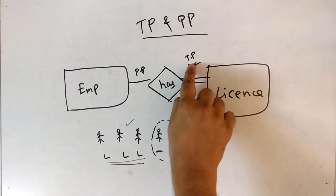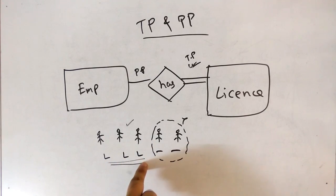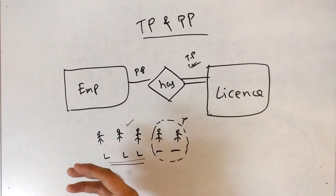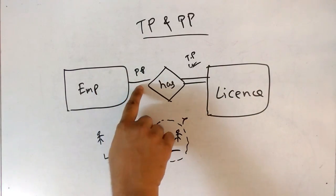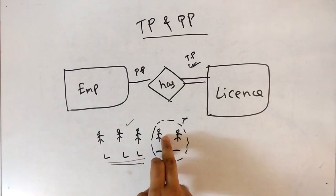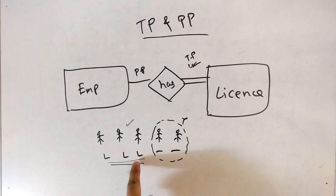So total participation says, if there is license, there is an employee, there must be an employee. There is compulsory an employee. So must and compulsory are the terms that pops out. But when we talk about the partial participation, we can note that if there is an employee, it is not necessary that it will have the license. Some may have, some may not have. So this is the partial participation scenario.